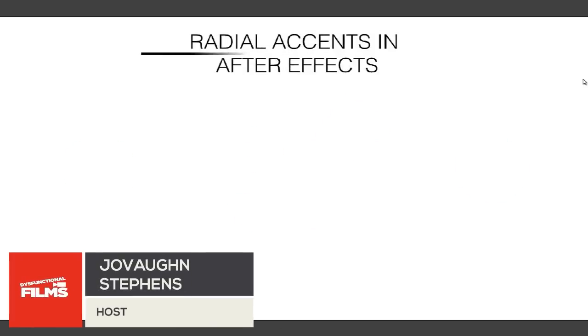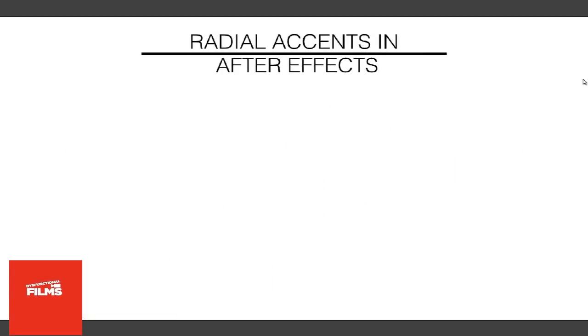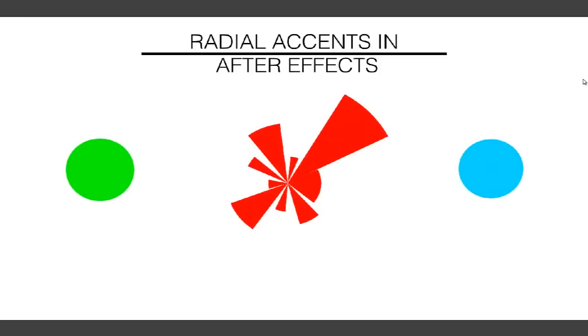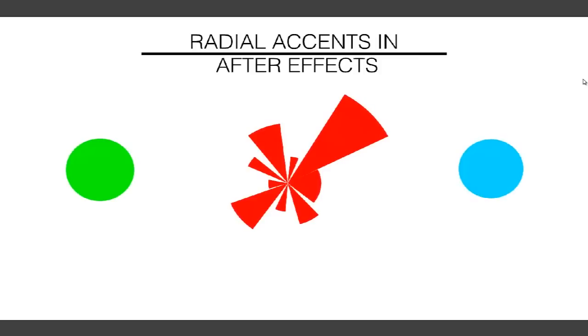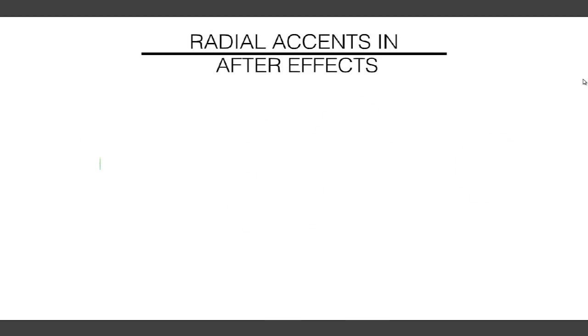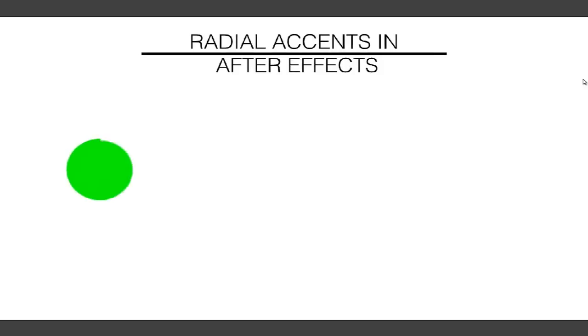Hello ladies and gentlemen, Vaughn here with Dysfunctional Films, and I am back with another tutorial. I had my coffee, so this is going to be a very exciting tutorial. In this tutorial, I'm going to show you radial accents in After Effects — something you would use in your motion graphics to make it a little bit more interesting and fun. I'll show you different ways of bringing on radial effects by manipulating some of After Effects' built-in effects.